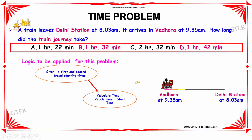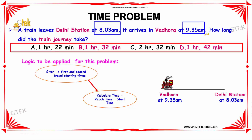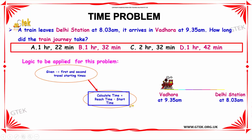The logic to be applied for this problem is: first of all, we need to identify the given data. The given values are the start time and reach time, which are 8:03 AM and 9:35 AM. So we calculate the time by using the formula: time equals reach time minus start time. That is, the reach time is 9:35 AM and the start time is 8:03 AM.